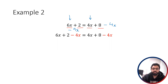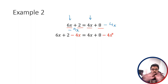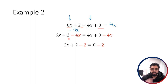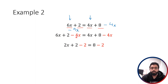So I subtract 4x from both sides to get rid of all the x's on the right-hand side. The plus 4x and minus 4x cancel each other out, leaving just an 8 on the right-hand side. On the left we have 6x minus 4x, which is 2x, plus 2. So we've got 2x + 2 = 8.